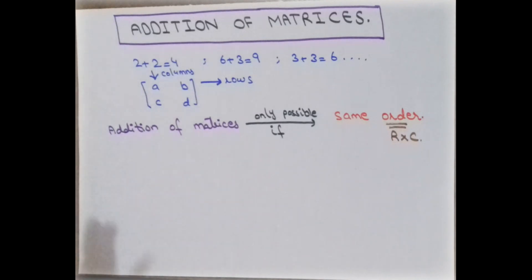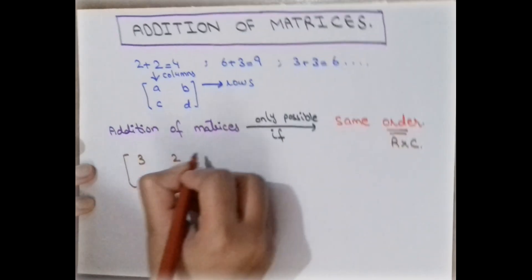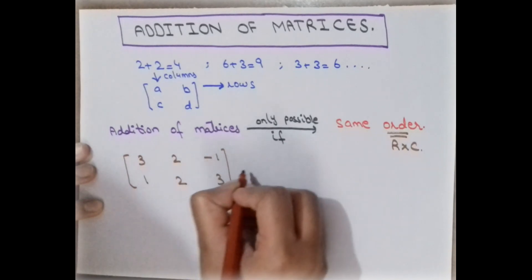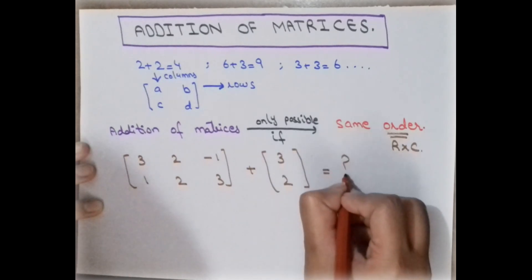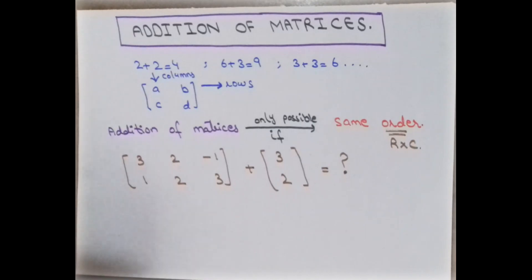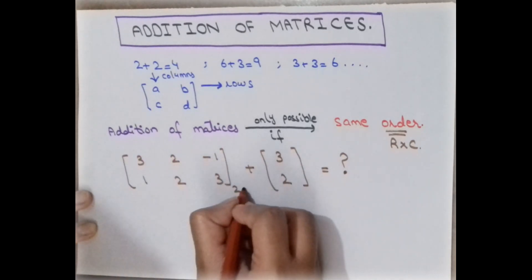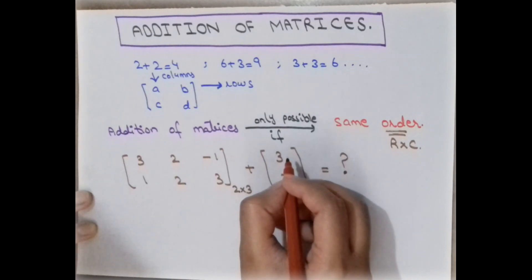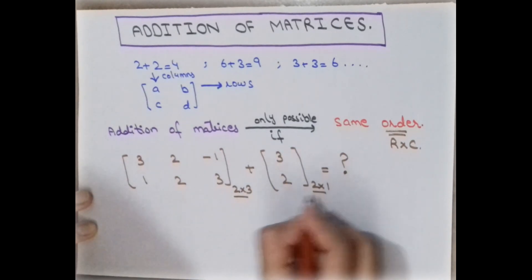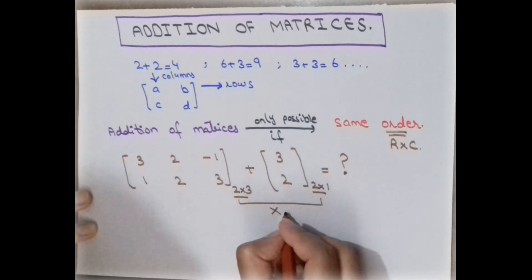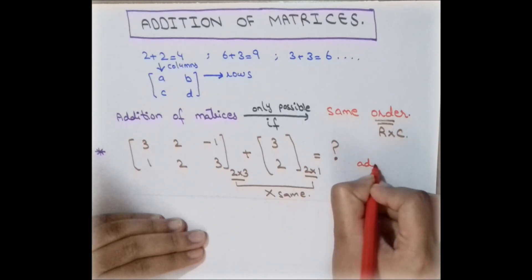For example, take a matrix with values 3, 1, 2, minus 1, 2, and 3 and another matrix to add. First, check the order of the first matrix: it has two rows and three columns, so the order is 2 by 3. Now check the second matrix: it has two rows and one column. Since the orders are not the same, the addition of these two matrices is not possible.